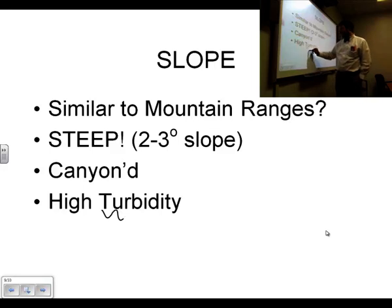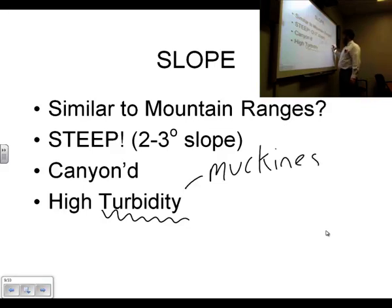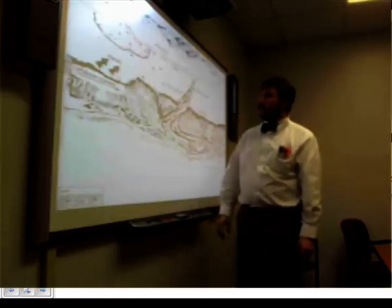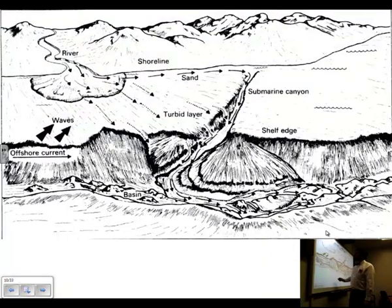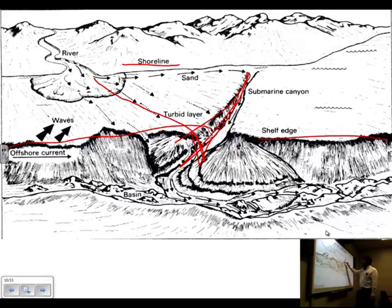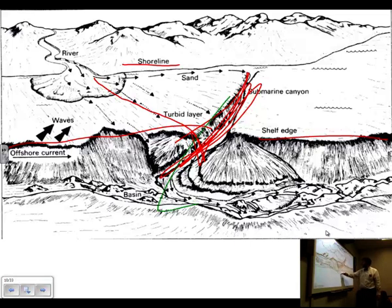Because of those canyons, the slope has what's known as high turbidity. Turbidity refers to the muckiness or general grossness of the water. If the water has high turbidity, it's usually flowing very fast and carrying a lot of sediment, which turns the water very dark. Here's an example showing the shoreline, sand being moved down the continental shelf, and then the very steep slope like a mountain range. You can see a river flowing down into a canyon, carrying sediment and creating a big turbidity current.